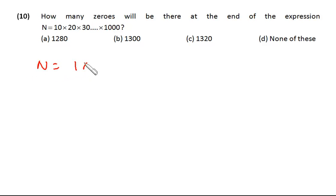Suppose I write it 1 into 2 into 3 till 100, and from every number I am taking 10 as common. So it is 10, it will be 2, it will be 3, and it will be 100. So I am taking 10 common for 100 times, so already there are 1000 zeros.